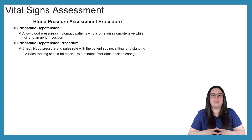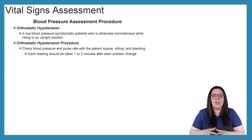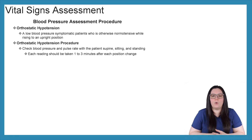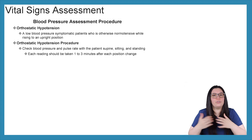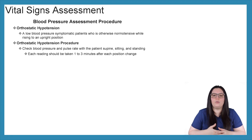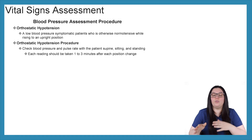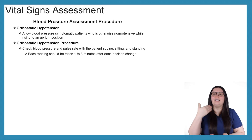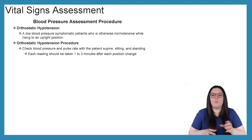An additional blood pressure assessment you can perform is the orthostatic hypertension procedure. Orthostatic hypertension is a low blood pressure in symptomatic patients who are otherwise normal, occurring when raising up to an upright position. This is performed in three positions: you check blood pressure and pulse rate with the patient supine (lying down), in a sitting position, and standing up. Each reading should be taken one to three minutes after each position change.